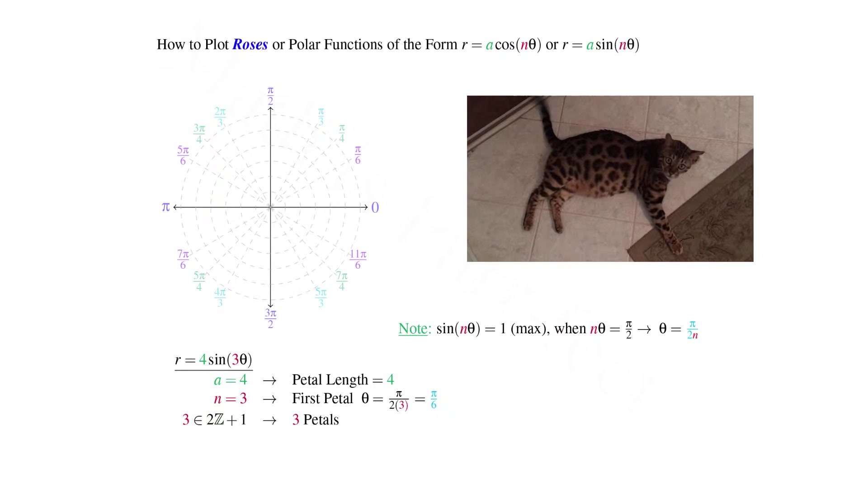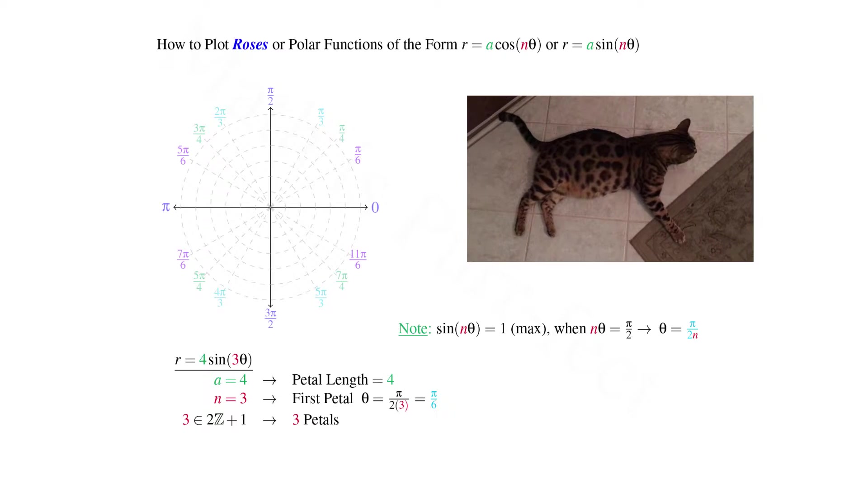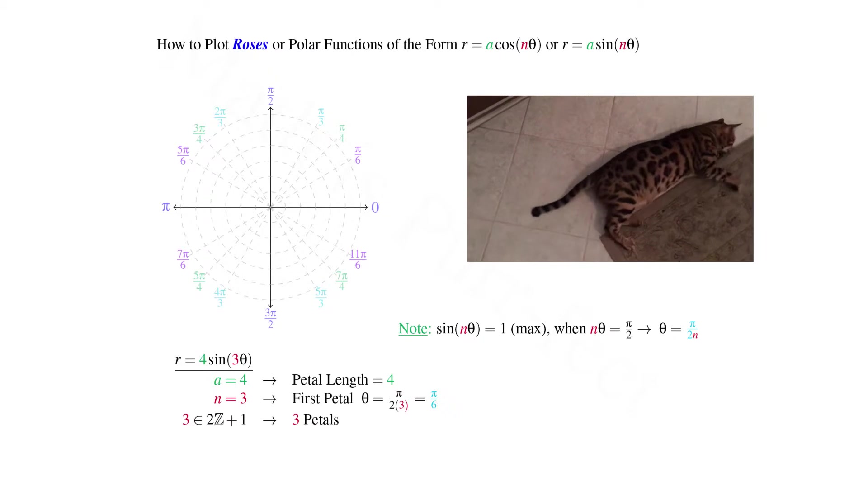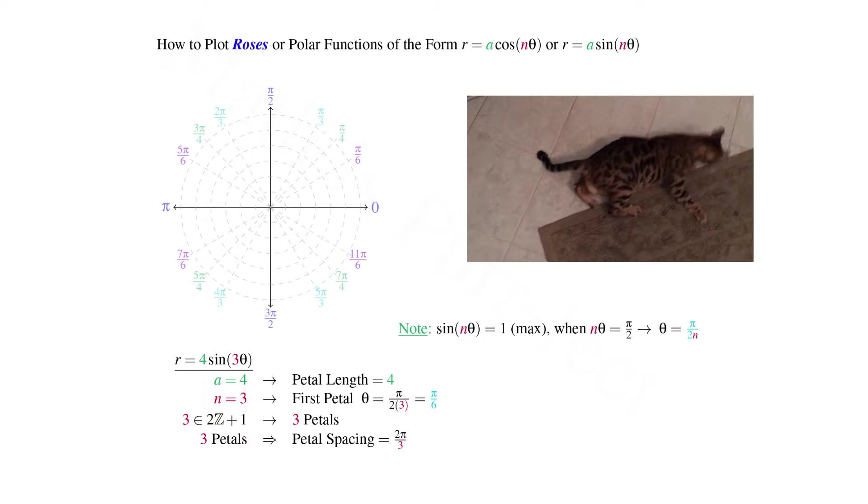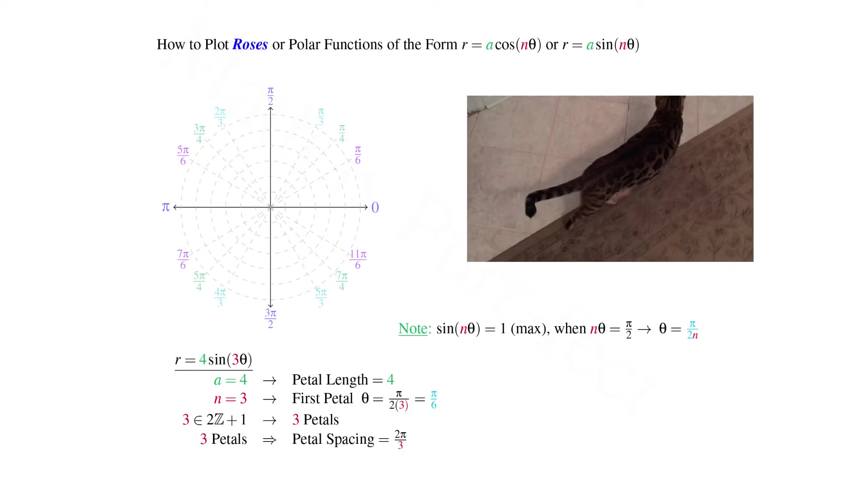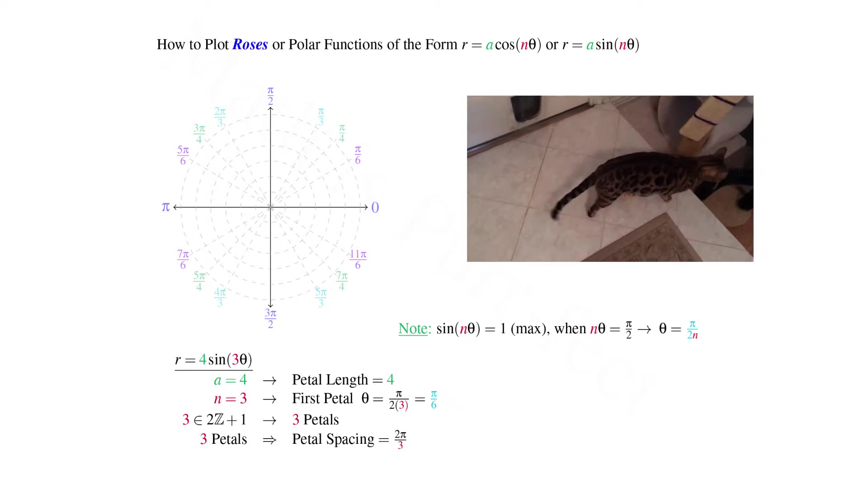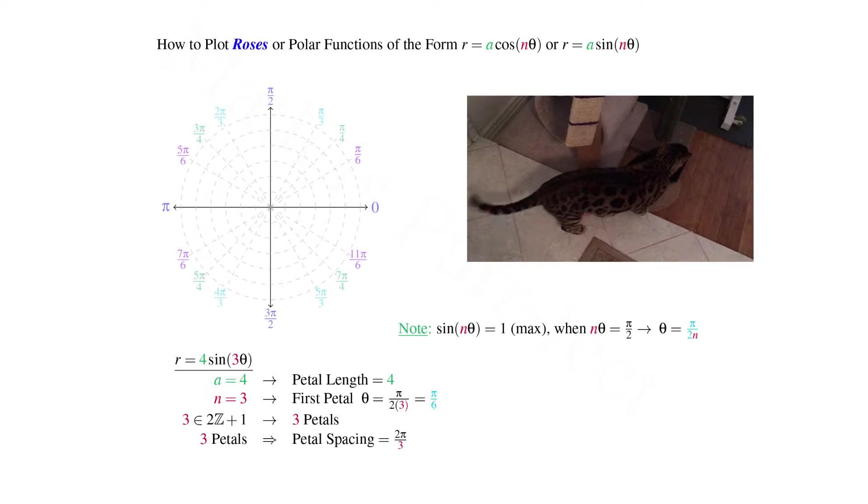Since 3, our coefficient of theta, is odd, we have 3 petals in total. Hence the even spacing of 3 petals within 360 degrees or 2π radians is 2π/3.